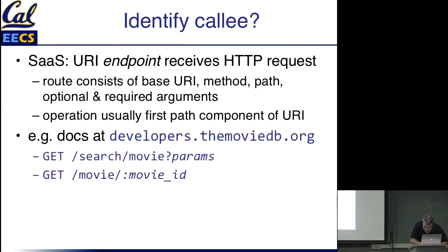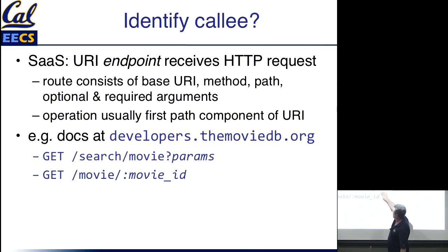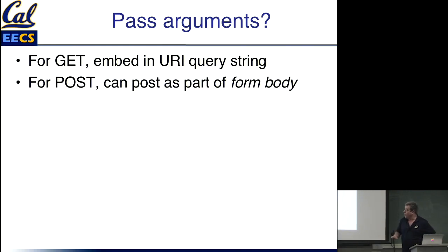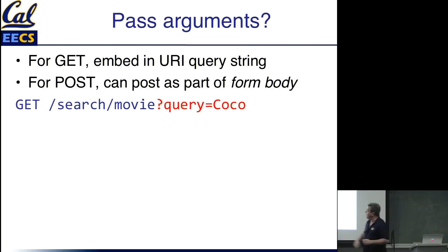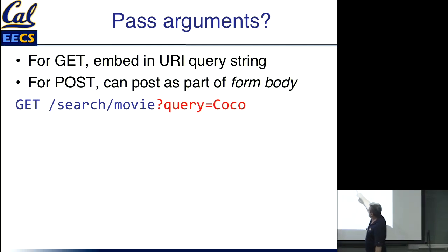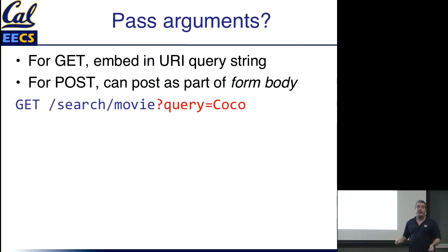Looking at the API docs for the Movie Database, to search for a movie by a string, they tell you the required and optional parameters — this path is basically the name of the function. For GET requests, parameters are typically embedded right in the URI. For POST requests, when you fill out a form on a web page and submit it, the form data gets passed as part of the request body — but for now we'll just work with parameters embedded in the query portion of the URI. For example, GET /search/movie?query=coco means there's a named argument called 'query' and we're passing the value 'coco'. We know the parameter name is 'query' because we read the API documentation.